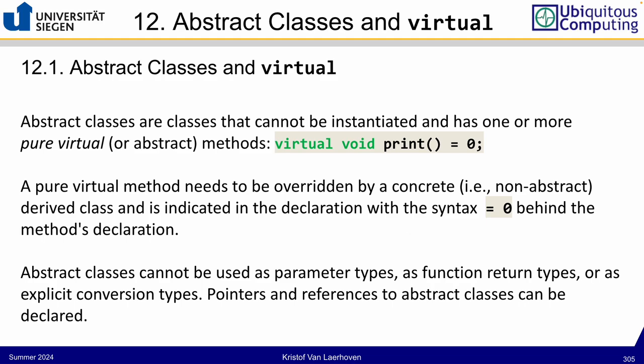The goal of an abstract class is not just to have the class itself, but to inherit from it. Inheriting from an abstract class is like a contract — a promise that you will implement the pure virtual method. If you don't, the inherited class is also abstract, and you continue until you do override and implement it.